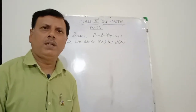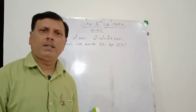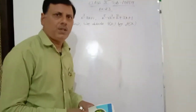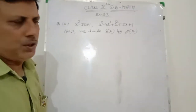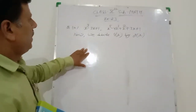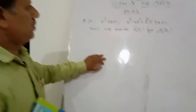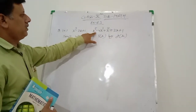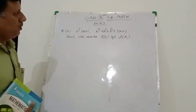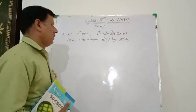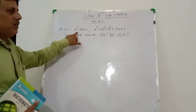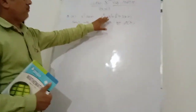Good morning students, myself Yogendra Tiagi, this is your math class. Today we will discuss again Exercise 2.3 and some important questions. The question is: f(x) = x³ - 3x + 1 and g(x) = x⁵ - 4x³ + x² + 3x + 1. We divide f(x) by g(x), then prove that g(x) is the factor of f(x).